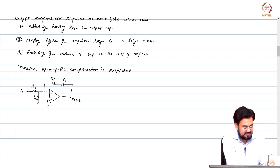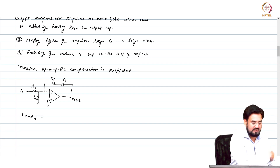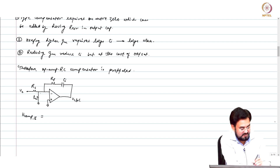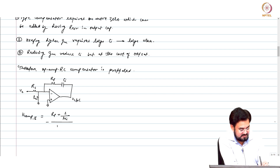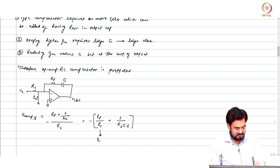If I want to write the transfer function of h_comp: beta will not come here. In the gm design we have a beta, but here beta will not come because of virtual ground. So it should be Rp plus 1 over S·Ci, which is nothing but Rp over R1 plus 1 over S·R1·Ci. So this is your kp and this is your ki.